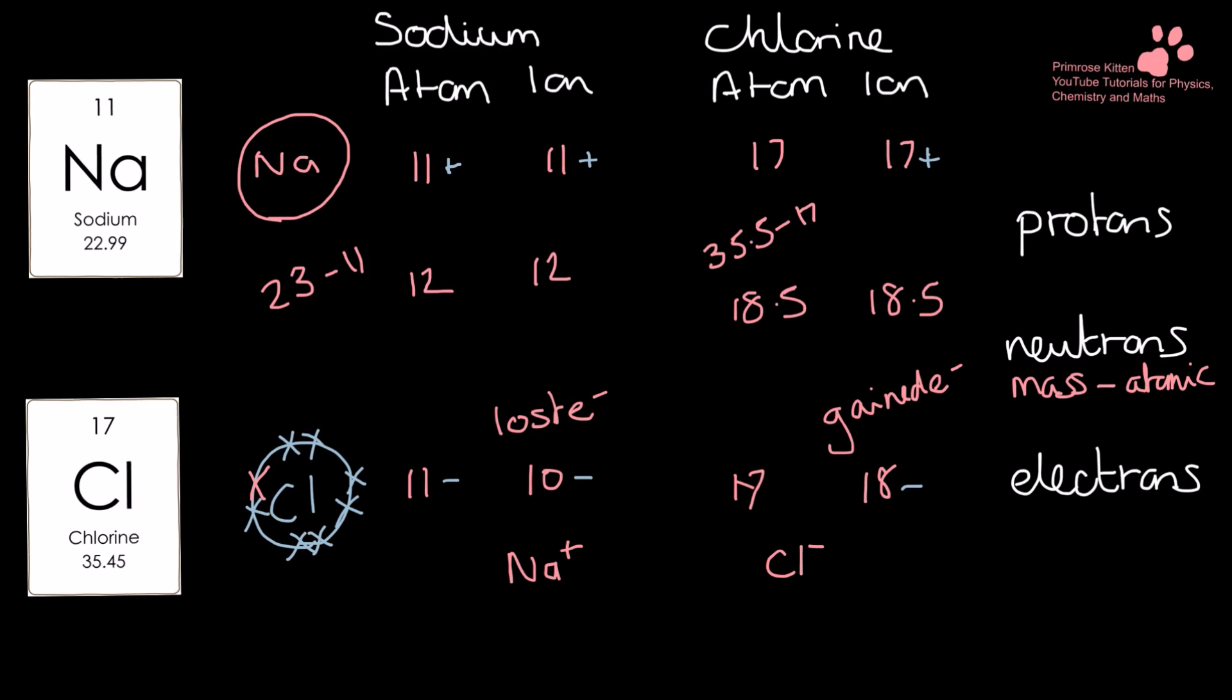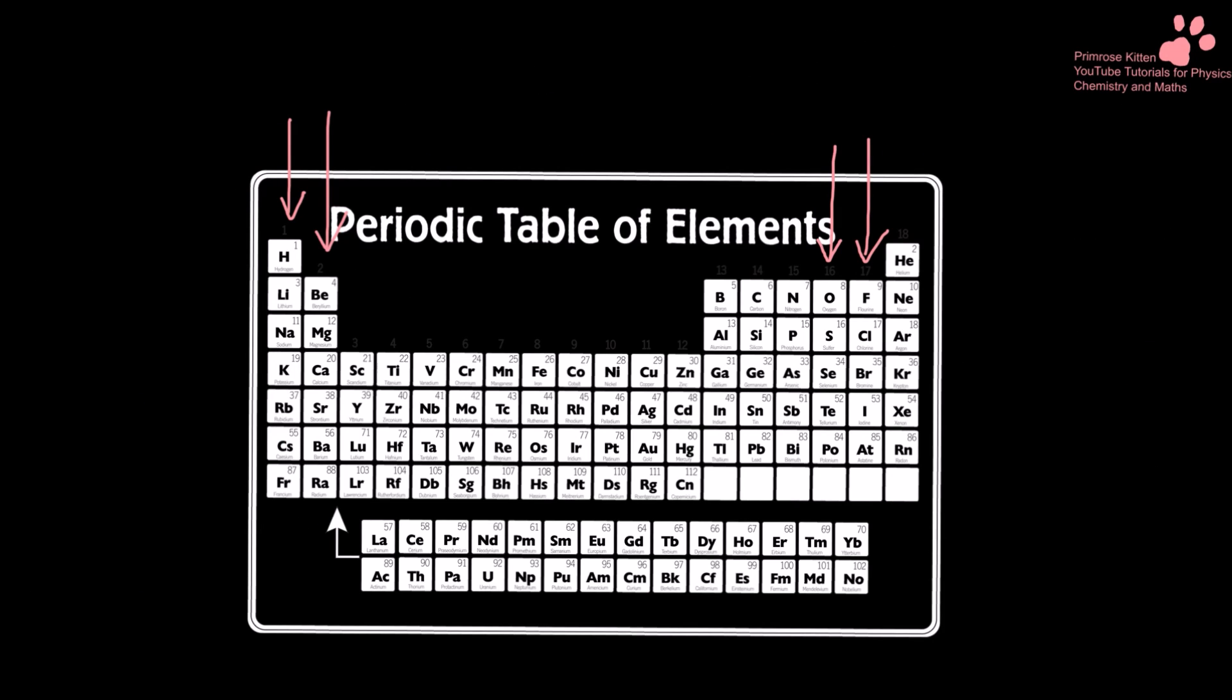Now, I would love for everyone to be able to work this out, but there is a quicker and easier way to remember it. As a general rule of thumb, and there are always going to be exceptions to rules, things that are in group one down here are going to form +1 ions. Things that are in group two down here are going to form +2 ions. Things that are in group six over here are going to form -2 ions, and things that are in group seven over here are going to form -1 ions.